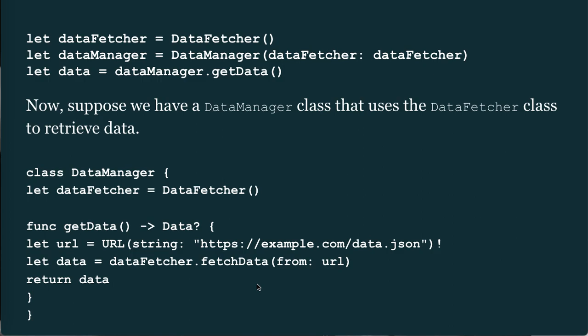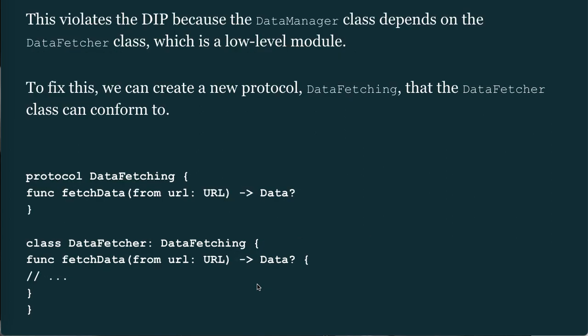Without the protocol, the DataManager class depends directly on the DataFetcher class: class DataManager { let dataFetcher = DataFetcher(); func getData() -> Data { let url = URL(string: ...); let data = dataFetcher.fetchData(from: url); return data } }. This violates the DIP because DataManager depends on DataFetcher, which is a low-level module.